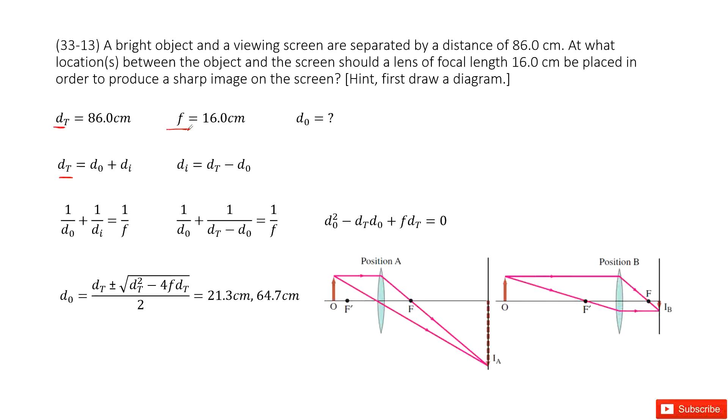The question is we need to find the object distance. Now we know the object location and the distance between object and the image. Between them there is a lens. We need to find the distance between the object to the lens. It looks like there must be two values. One value is the object is more close to the lens, the second value is the image is more close to the lens. If you plot a graph, it looks like these two. Let's see how we solve it.